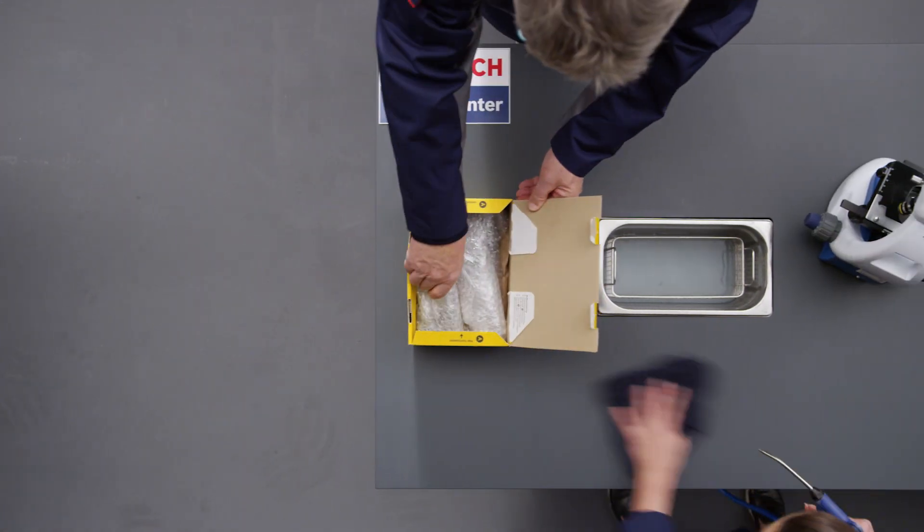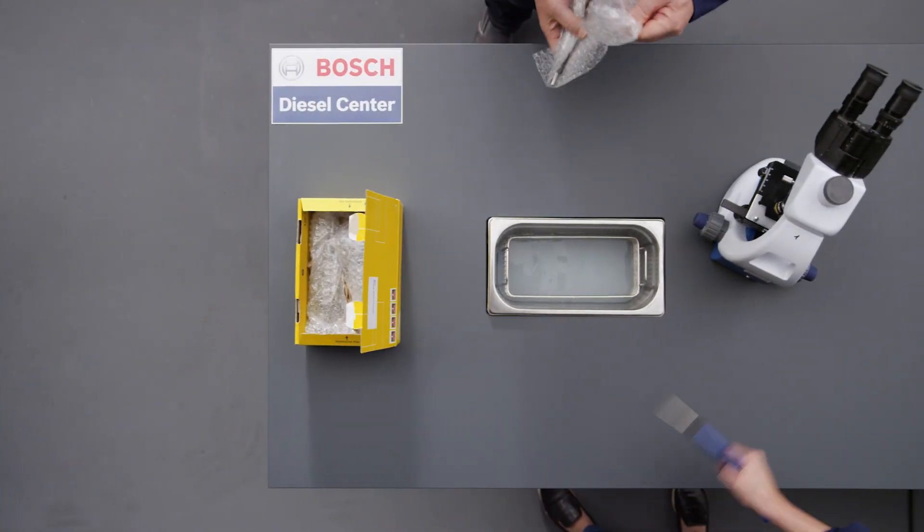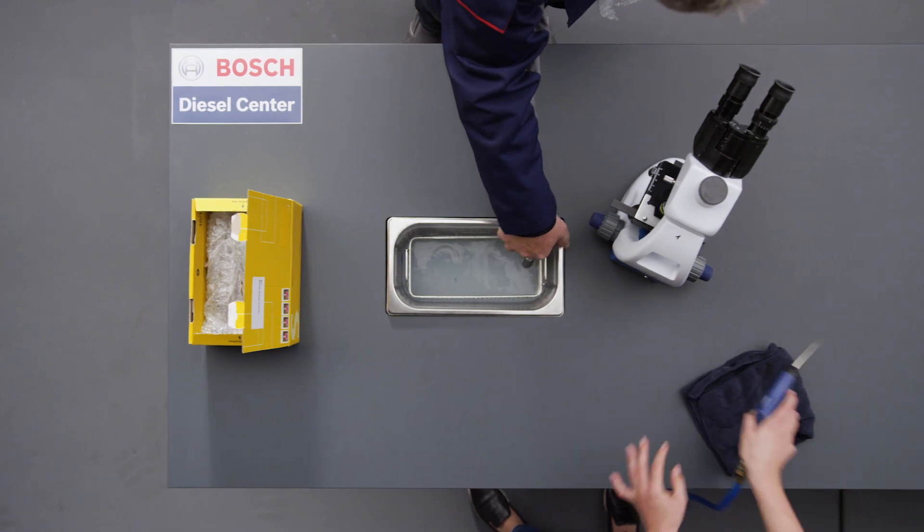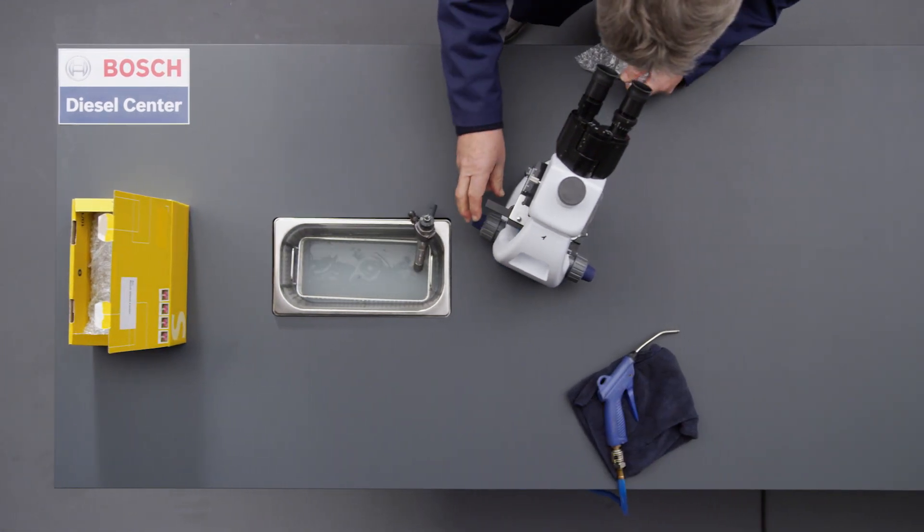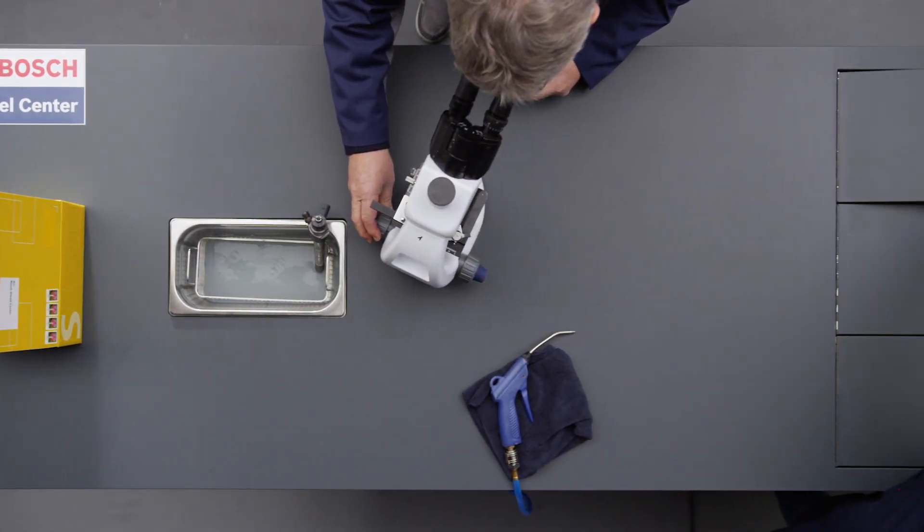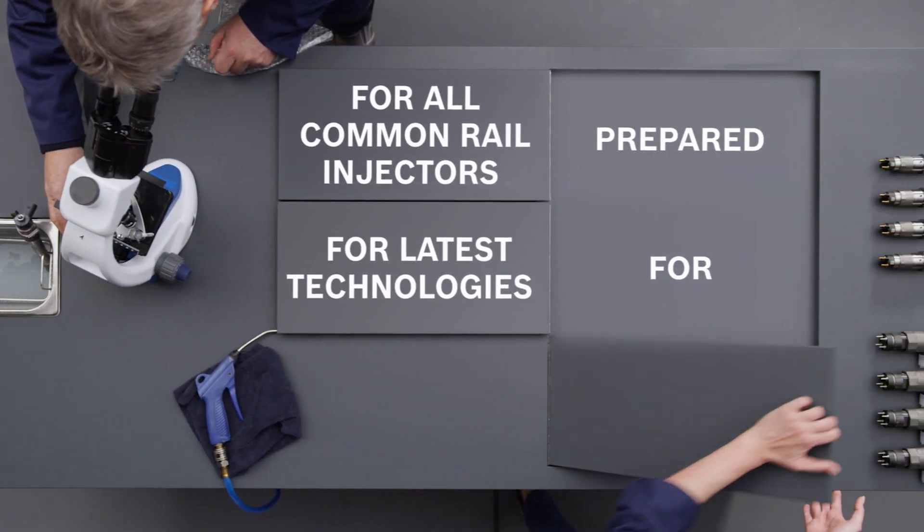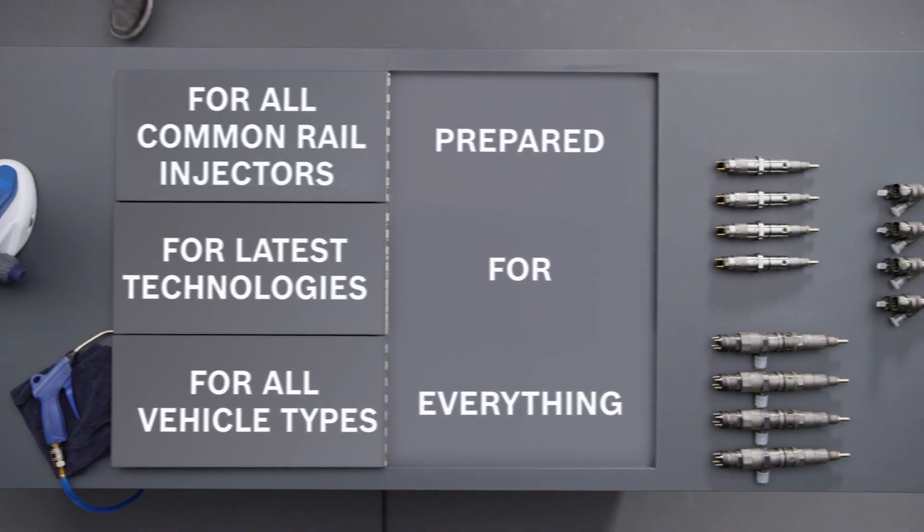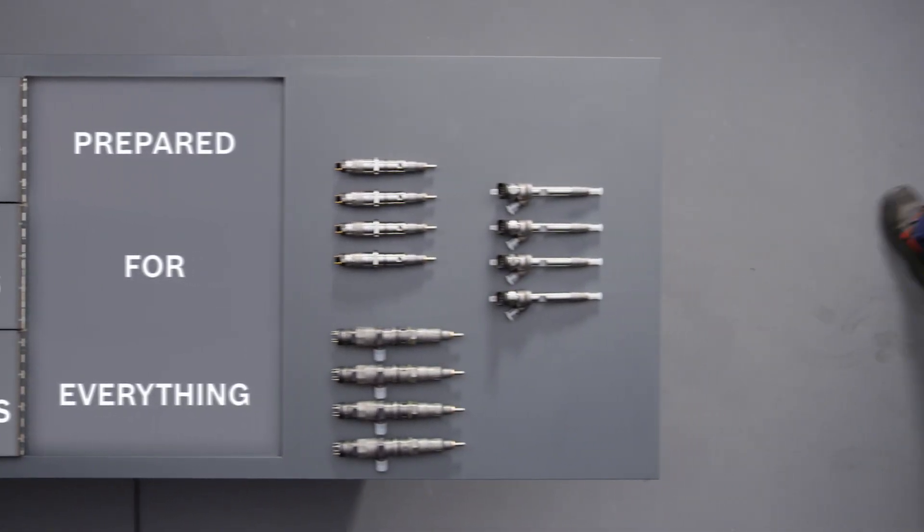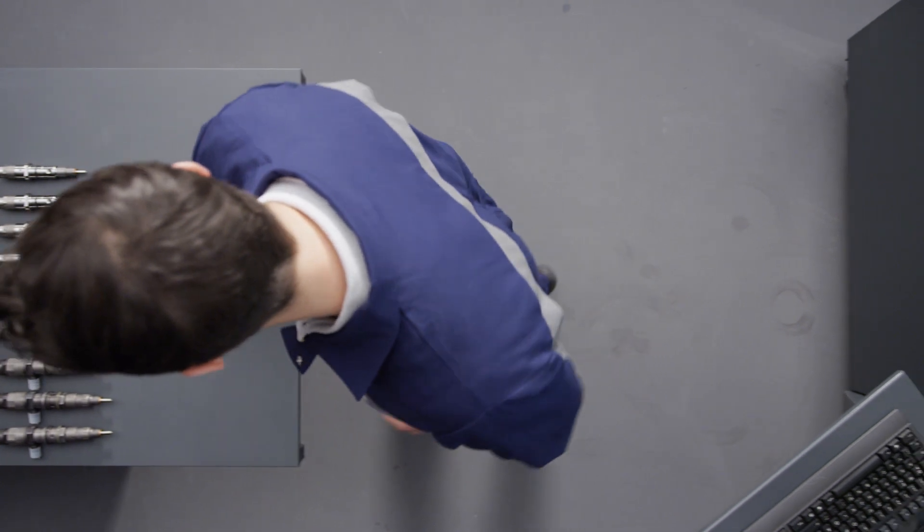This is where the real work begins. The DCI 700 is used to check the freshly cleaned injectors. With its highly precise quantity measurement system, the new Bosch component test bench covers even the new VCC and NCC technologies. A great investment in the future for diesel workshops.